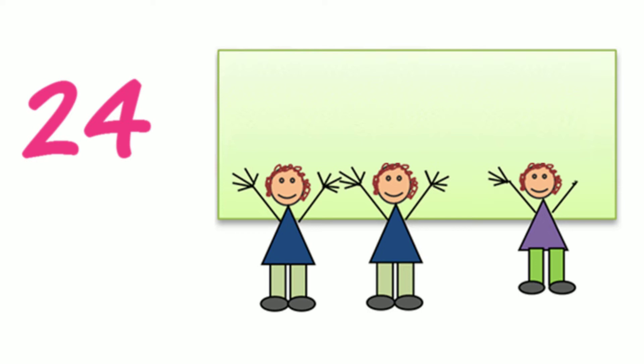How many fingers are two people showing us? Are two people showing us 10? Do we have two tens? How many is one person showing us? Is one person showing us four? Do we have four ones? What are we doing to the two tens and the four ones to make 24? Are we adding the two tens and the four ones to make 24?